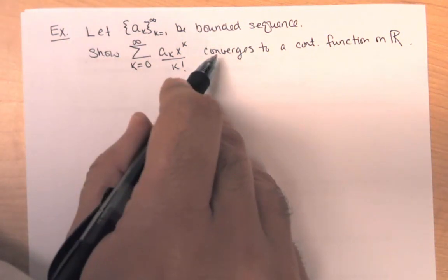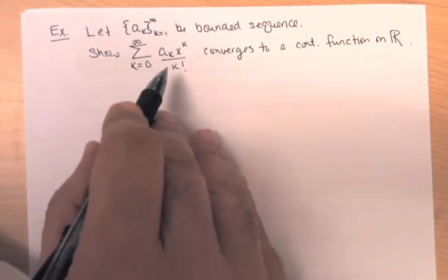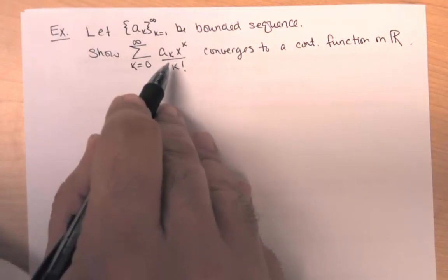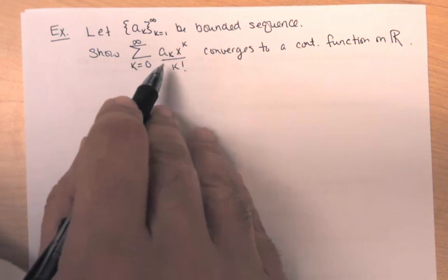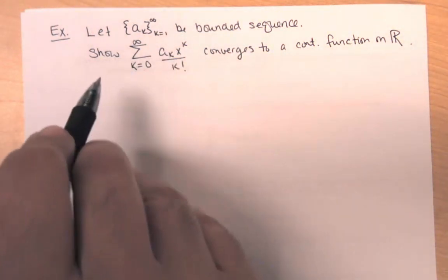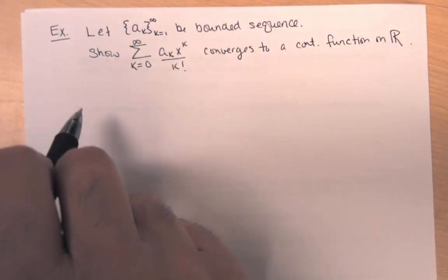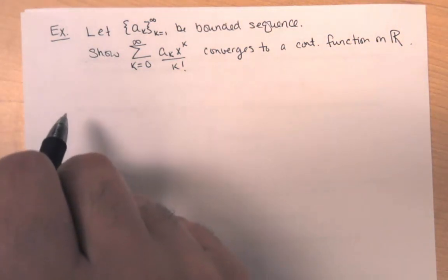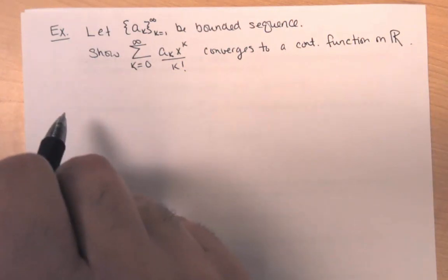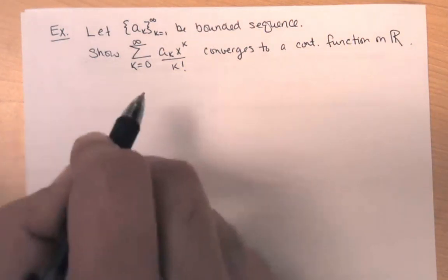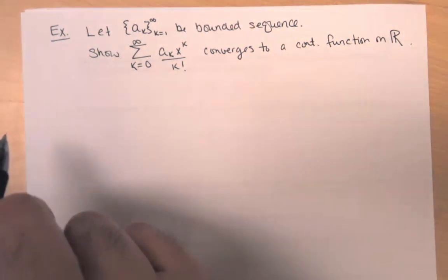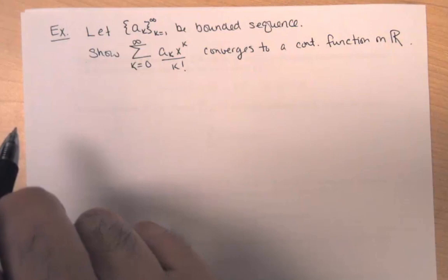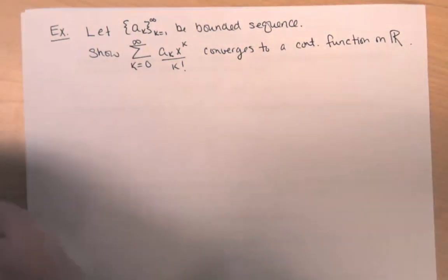We're actually going to show it converges uniformly. If I consider every partial sum, I have a polynomial — a scaled sum of integer powers of x — and polynomials are continuous. So my partial sums are continuous, and if they converge uniformly, then the function they converge to must also be continuous. That's something we proved in the last lecture, so we get the continuity part essentially for free.